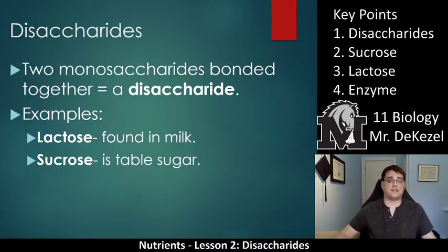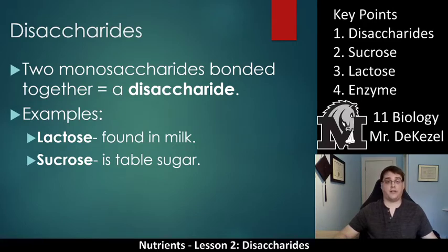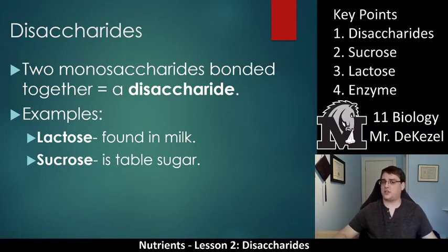Disaccharides are two monosaccharides bonded together. Some examples are lactose, which is found in milk — you might be familiar with lactose intolerance, which is what our section for you to do is all about. And then you've probably heard of table sugar, which is sucrose. You might not have called it sucrose before — you say 'pass the sugar,' not 'pass the sucrose.' So that is what we're going to focus on today.